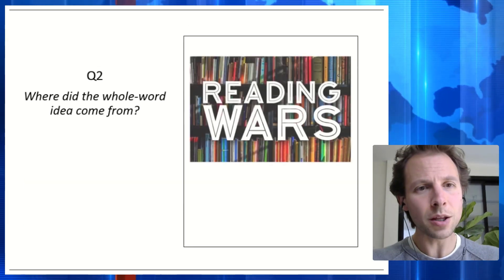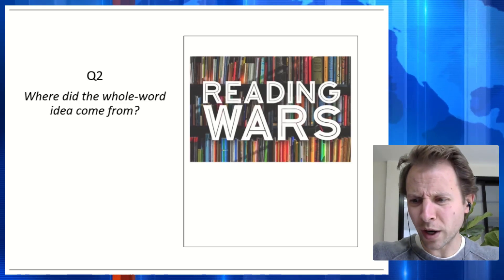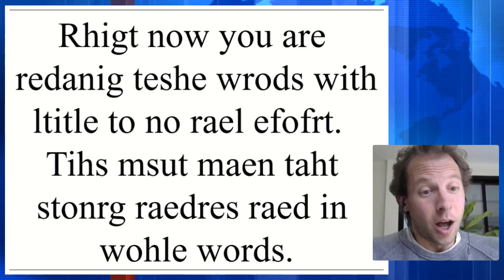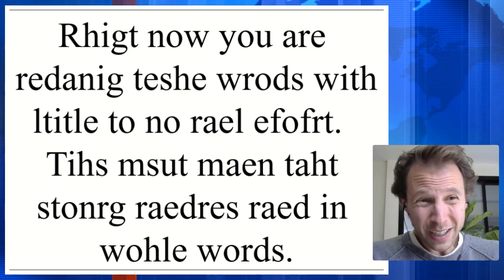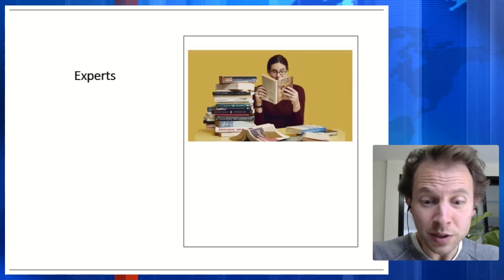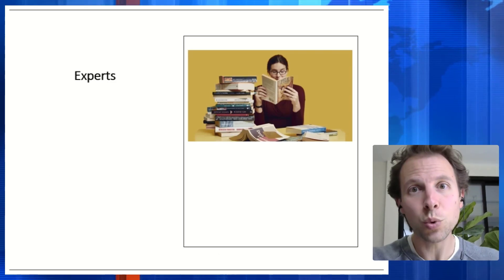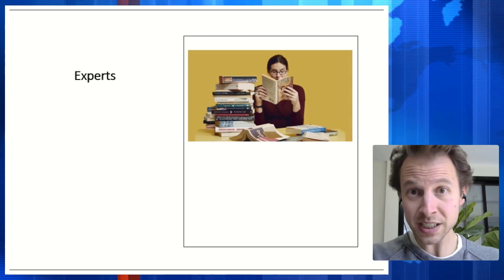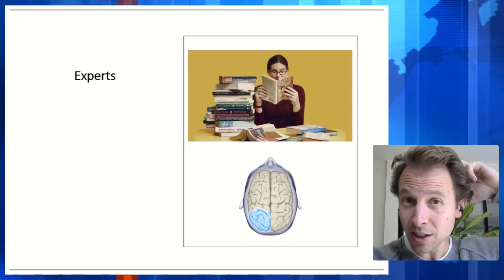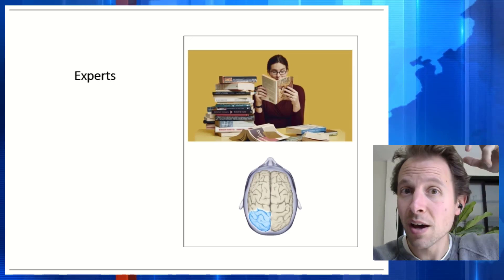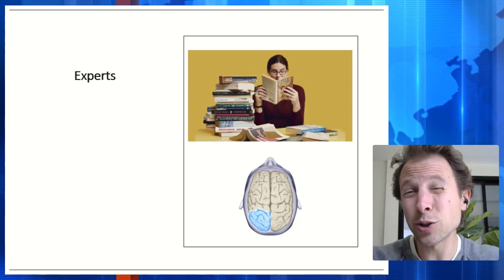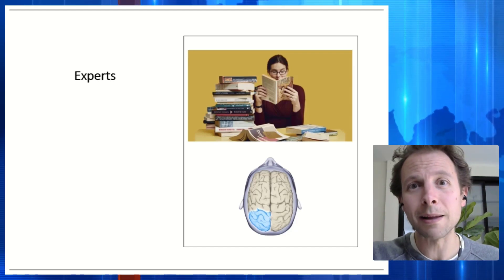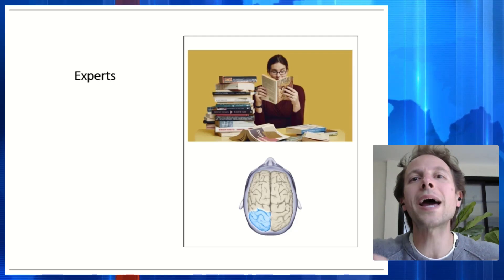Question two: Where did the whole-word idea come from? Although there's a lot of debate about the philosophy behind it, it came largely from the observation that expert readers appear to read full words — you don't even need the letters to be in the correct order and you're still able to read it. So the thinking was: experts are doing it one way, so let's just teach kids to do it that way. But when you go back to the brain, we're not actually reading whole words. We're still left-lateralizing, still breaking words down — the process of breaking words into phonemes takes about 150 to 170 milliseconds, which is pre-conscious. It happens before we even know it's happening, which is why it looks like we're reading in whole words.